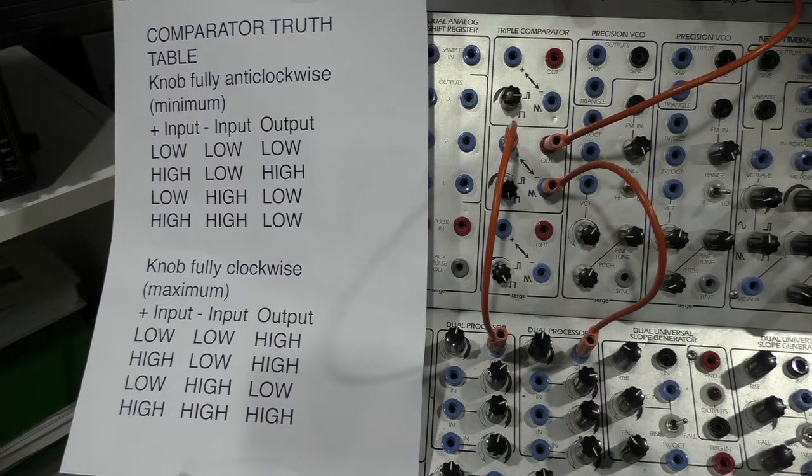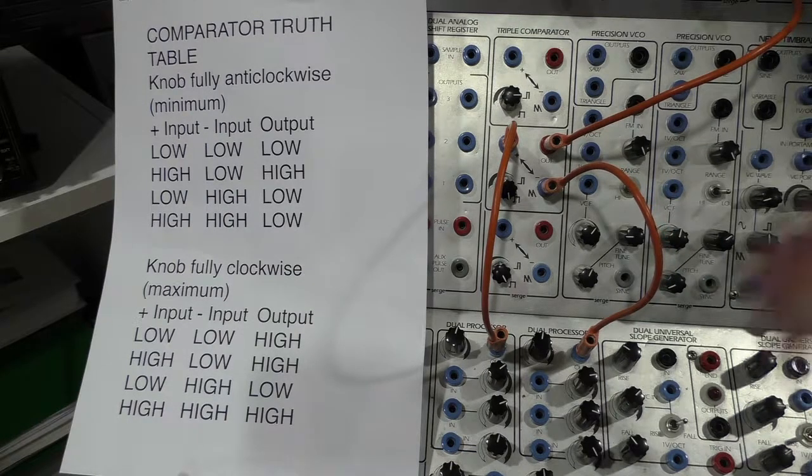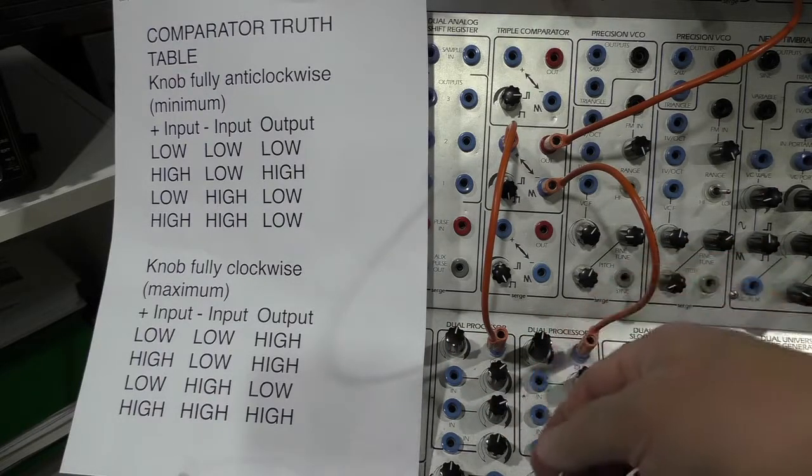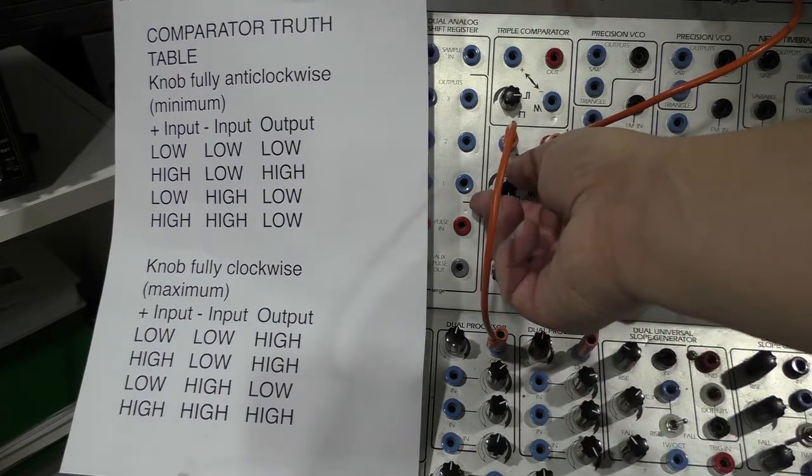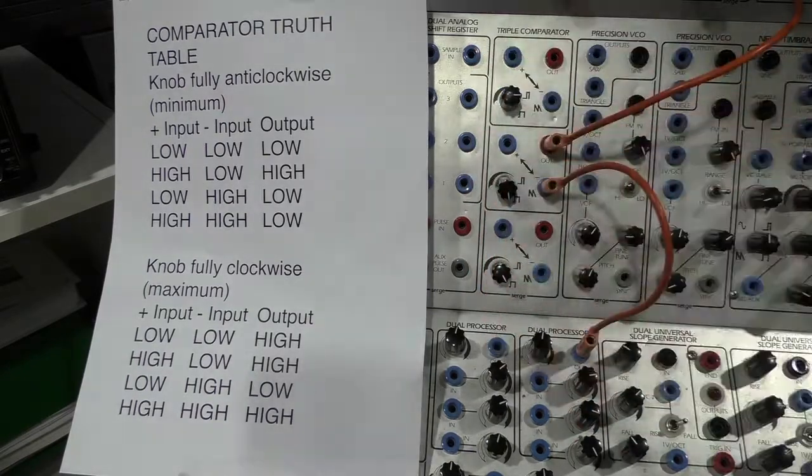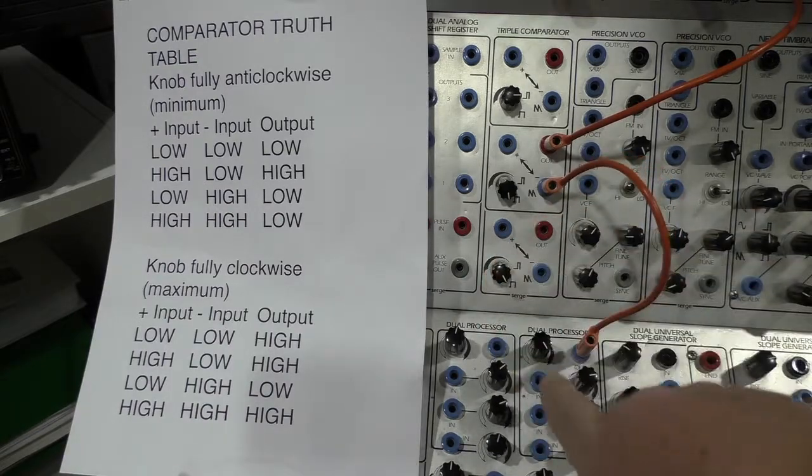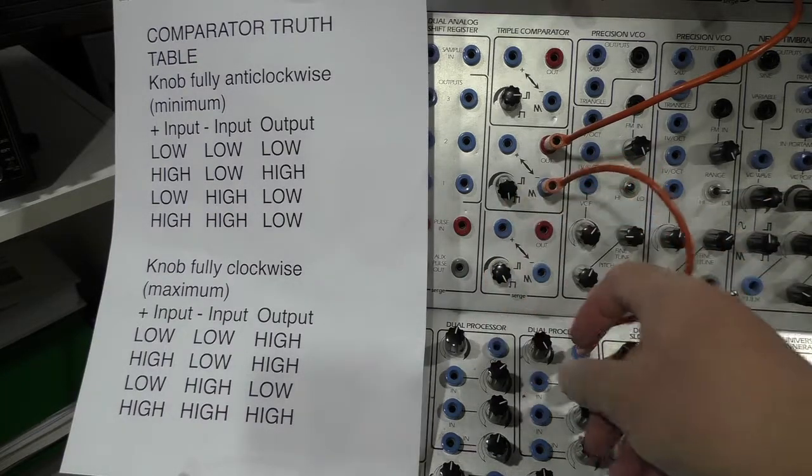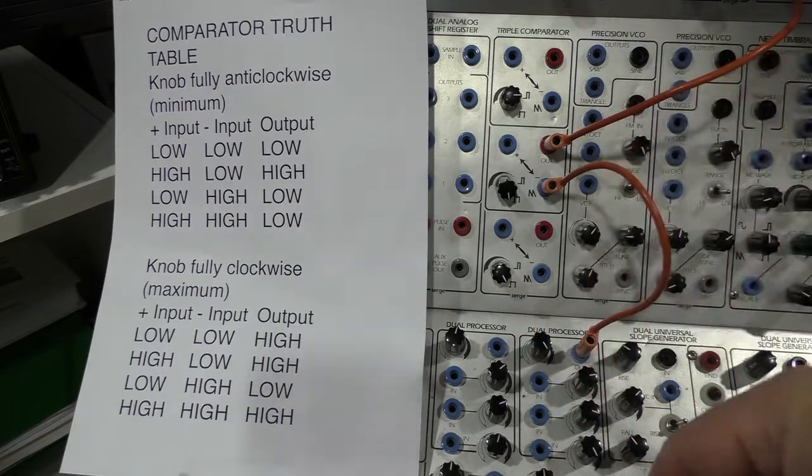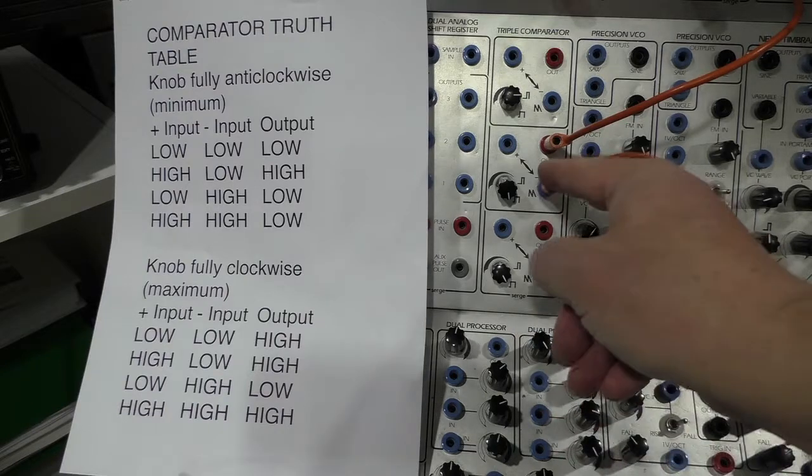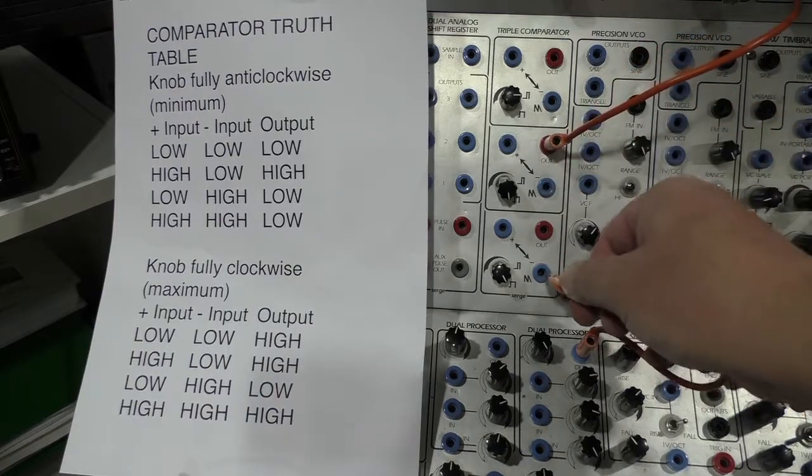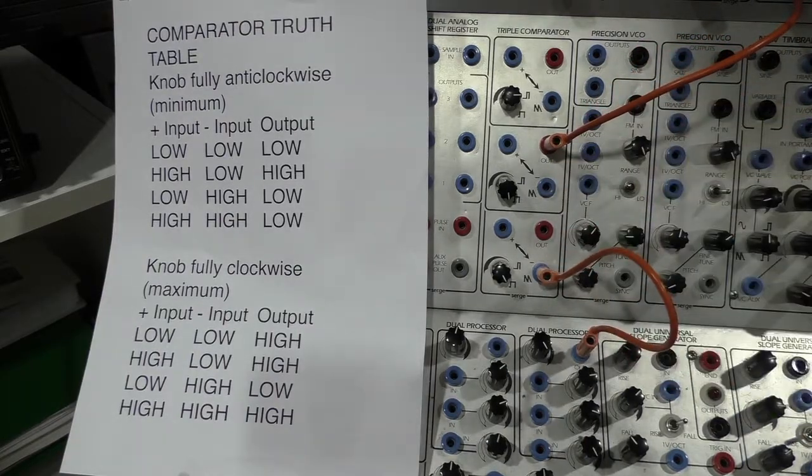Well, this is interesting to know, but it's not a logic function. Basically, what we can see from this is that if we have the knob turned fully clockwise and we turn the negative side up to a high voltage, this basically works as an inverter. High here becomes low at the output. So we're going to make use of that inverter function in the lower comparator.